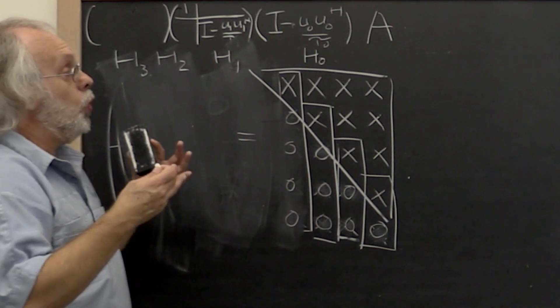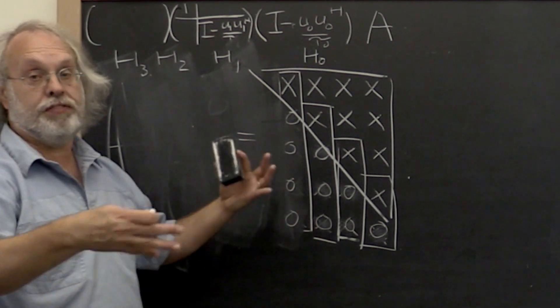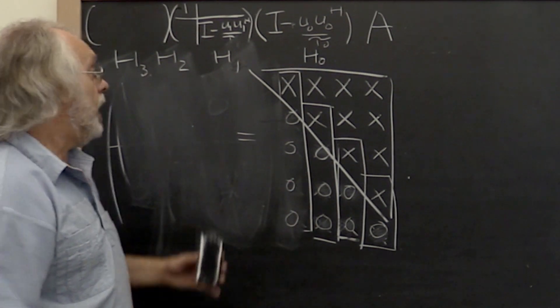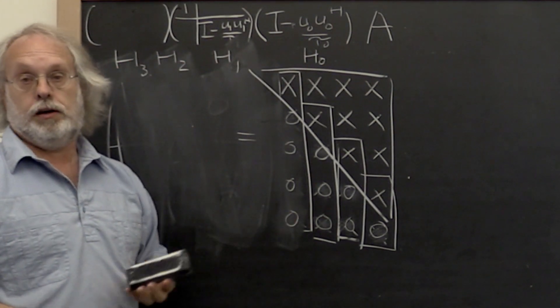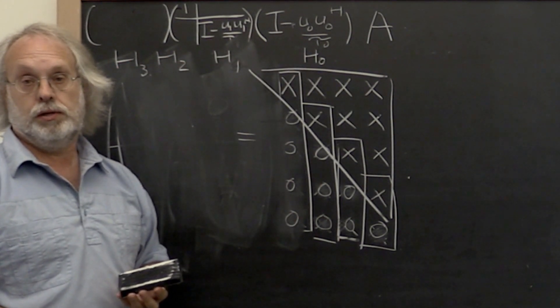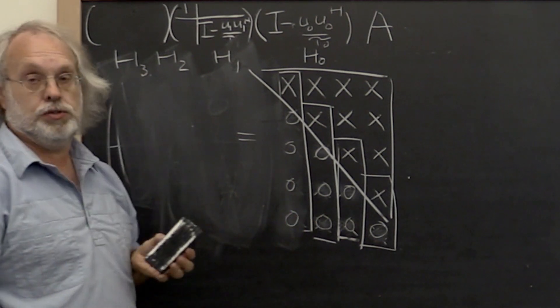Now we don't yet have a QR factorization. Why? We have not yet aggregated all of these into a unitary matrix Q. But we're pretty close.